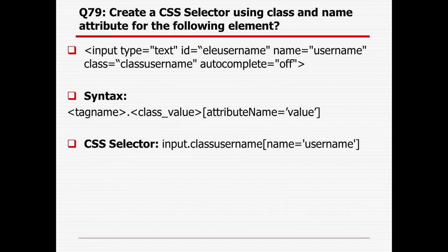CSS selector using class and name attributes together: we need to use another attribute apart from class when the class is not unique. The syntax is: tag name, dot, class, then in square brackets, provide the other attribute and its corresponding value. Here, tag name is 'input', dot, class name is 'class_username', and in square brackets, the name attribute with value 'username'. In case the class name is not unique, you need to use additional attributes.